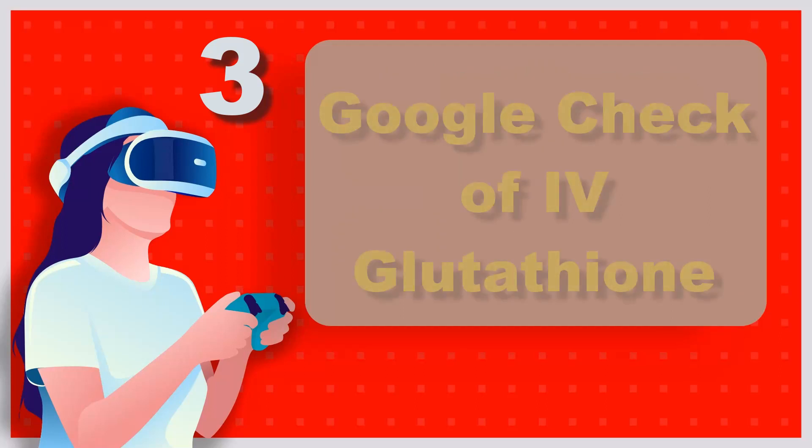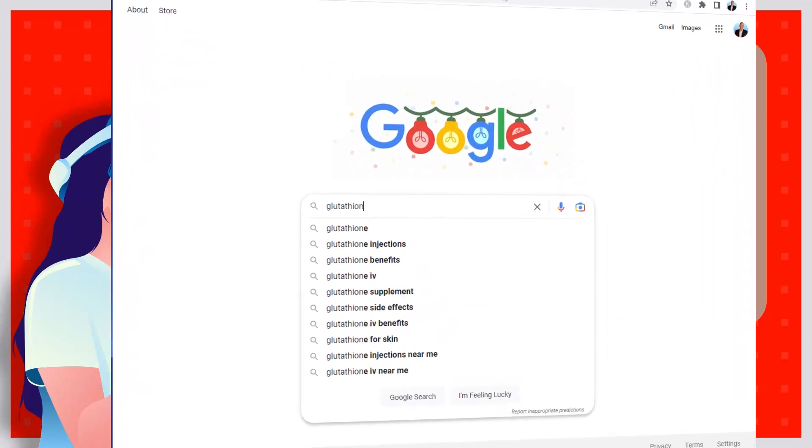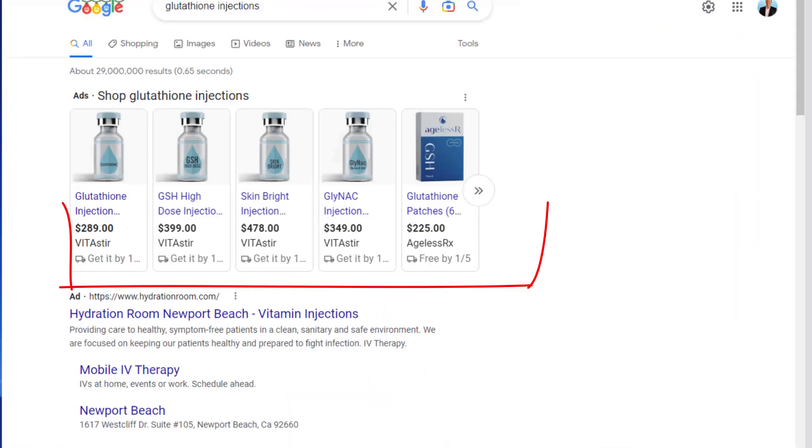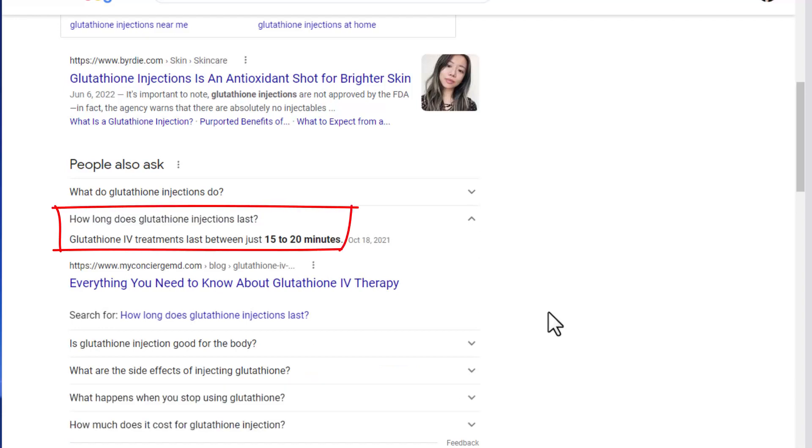Remember, I told you it's a bit expensive. We'll check the price on Google. And we type in glutathione. Notice what the autocomplete is. The first one is injections. Let's go take a look at injections. They must be important. Look at the prices here. How long do glutathione injections last? Boom! Look at that. 15 to 20 minutes. That's not very long.